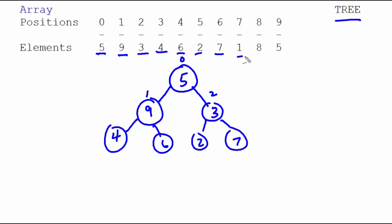The seven, the one, the eight, and the five. And all of the positions correspond to the array positions. They're just not in contiguous memory like an array is.